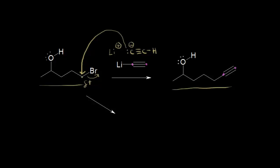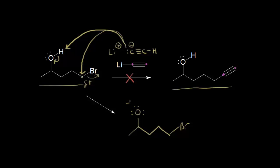Unfortunately, this is not the reaction that occurs, because organolithium compounds can not only be strong nucleophiles, they can also be strong bases. What would actually happen is this lone pair of electrons would function as a base, take this proton, leaving these electrons behind on the oxygen to form an alkoxide. So you would form a product where the oxygen has three lone pairs and a negative one formal charge, with lithium plus — an alkoxide product instead.